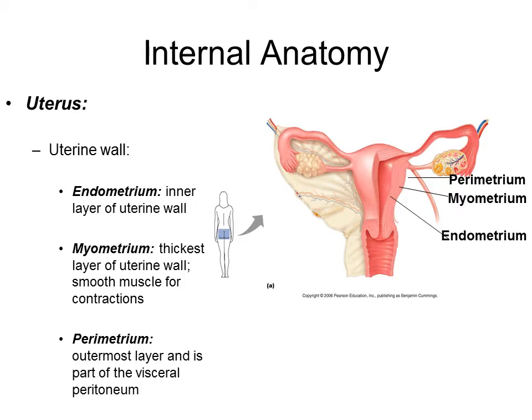The internal anatomy of the uterus is made up of three layers. The innermost is the endometrium. The middle layer — the thickest of the three — is the myometrium, which is composed of smooth muscle. The outermost layer is the parametrium.